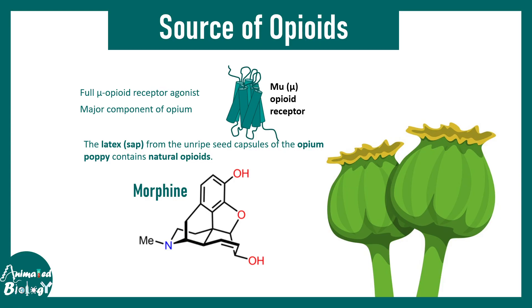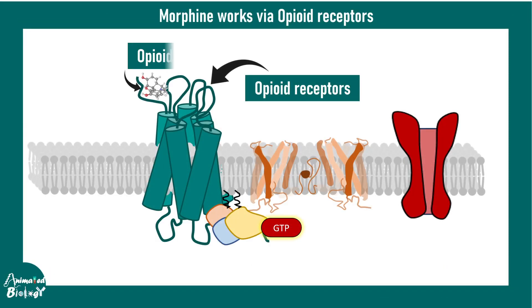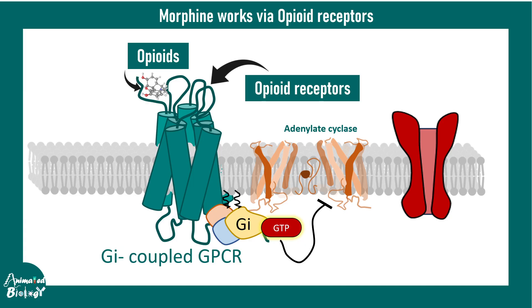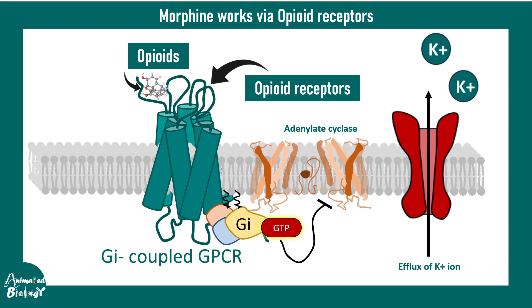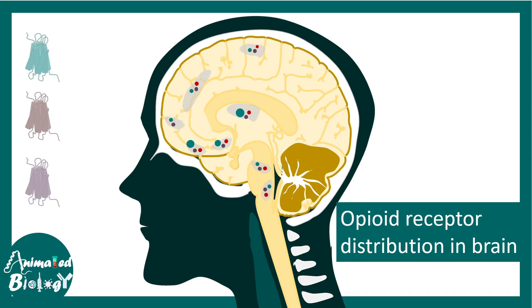Morphine works like a full mu opioid receptor agonist, meaning it binds to the receptor and augments its activity. These mu opioid receptors, when bound by morphine, trigger a G protein-coupled receptor response. This is a Gi-coupled receptor, meaning it prevents adenylate cyclase from generating cyclic AMP. Another response it leads to is the opening of certain ion channels, causing efflux of potassium ions.